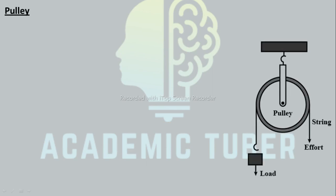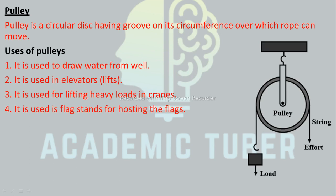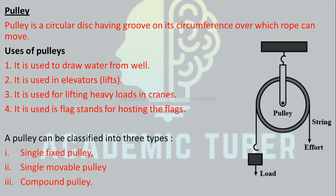Pulley: a pulley is a circular disk having a groove on its circumference over which a rope can move. Uses of a simple pulley: it is used to draw water from a well, in elevators and lifts, for lifting heavy loads in cranes, and for hoisting flags. A pulley can be classified into three types: single fixed pulley, single movable pulley, and compound pulley.